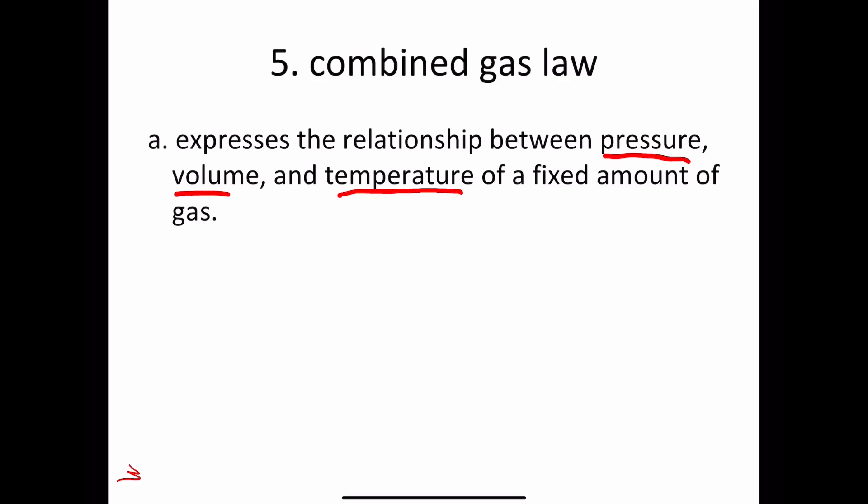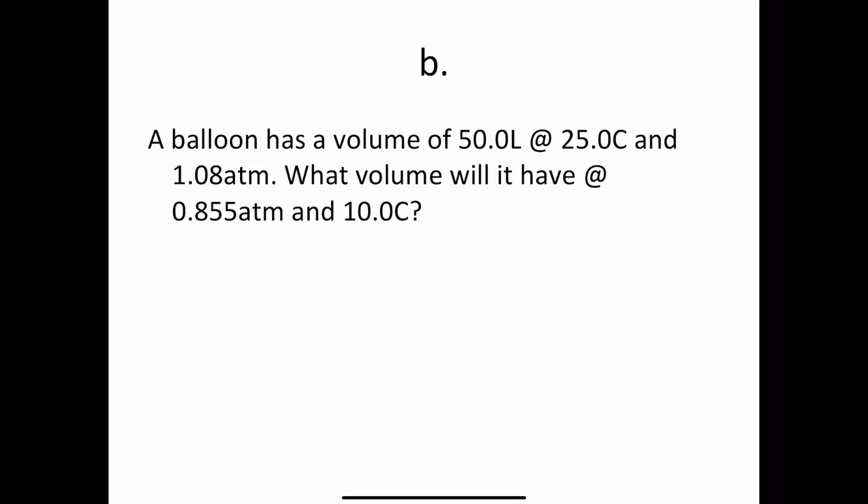It's all going to be connected together. We're not going to change the number of molecules yet. So a balloon has a volume of 50 liters at 25 degrees Celsius, and it's also at 1.08 atm. What volume will it have at 0.855 atm and 10 degrees Celsius?